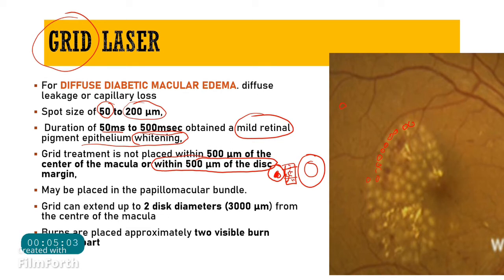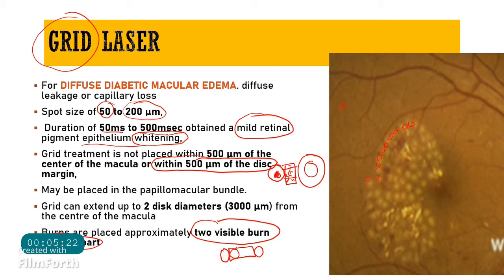The distance between each laser spot in grid therapy should be about two visible burn widths apart. This spacing is important because laser burns tend to expand with time — if spots are placed too close together, they will merge, causing greater visual problems for the patient later on.